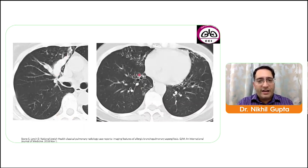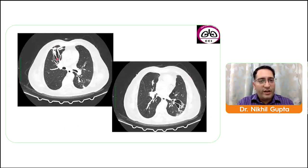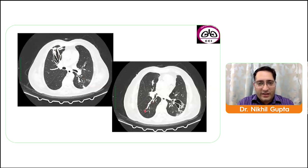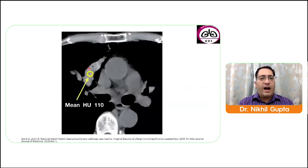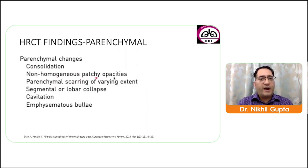Shown are CT images of mucus plugging and bilateral central bronchiectasis, and another CT showing classical varicoid bronchiectasis with patchy consolidations, tree-in-bud nodules, and mucus impaction. High-attenuation mucus plugs have Hounsfield unit value greater than 100. Parenchymal findings include consolidation, non-homogeneous patchy opacities, parenchymal scarring of varying extent, segmental or lobar collapse, cavitation, and emphysematous bullae.